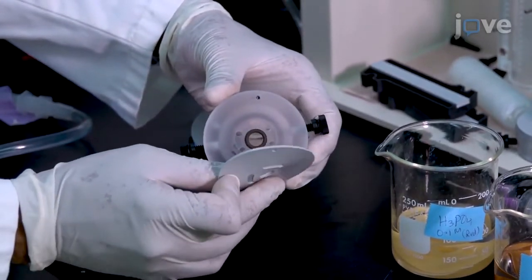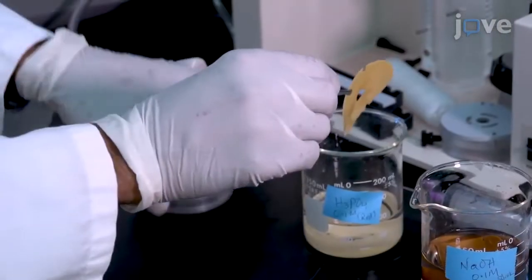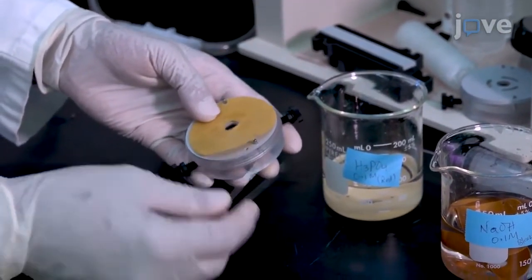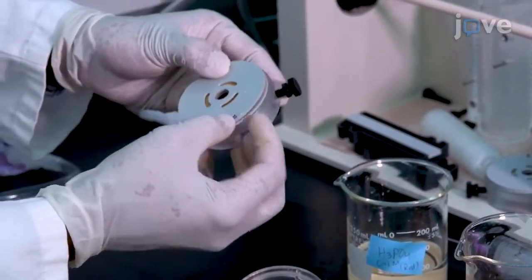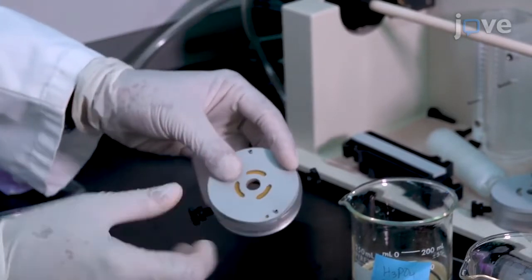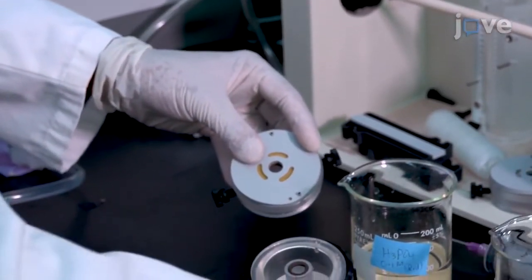Assemble the inner and outer portion of the electrode by aligning the three oblong holes in the ion exchange gaskets. Then fill the electrodes with their respective electrolytes to prevent their membranes from drying out.